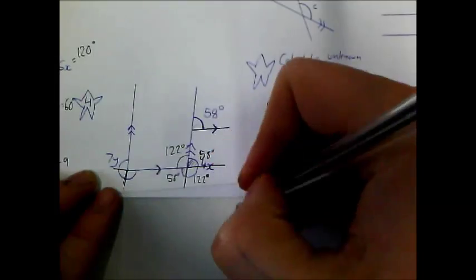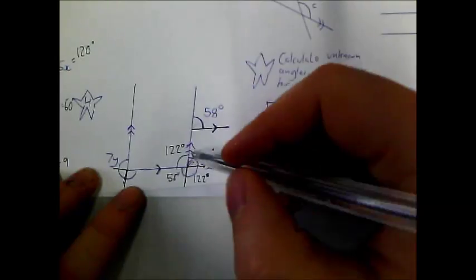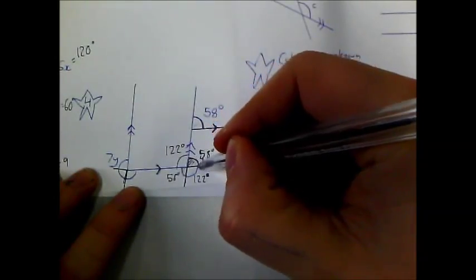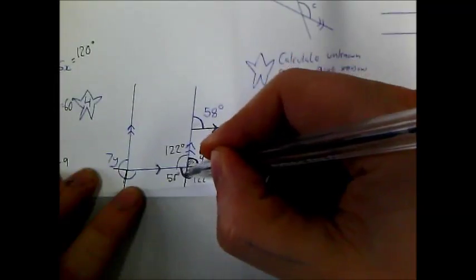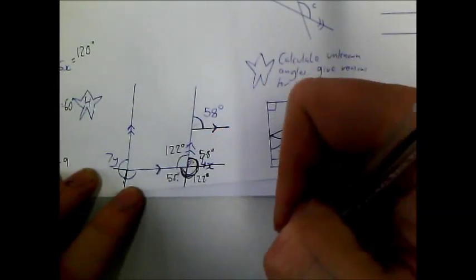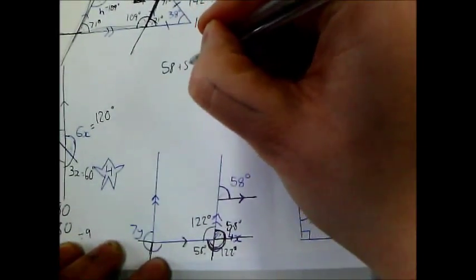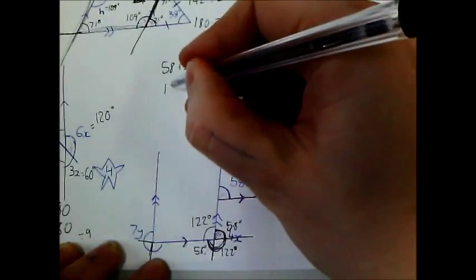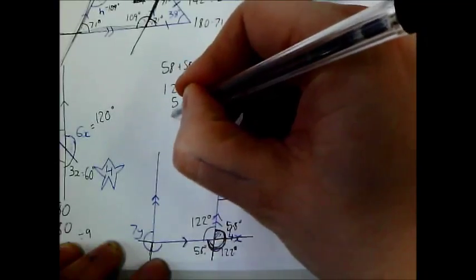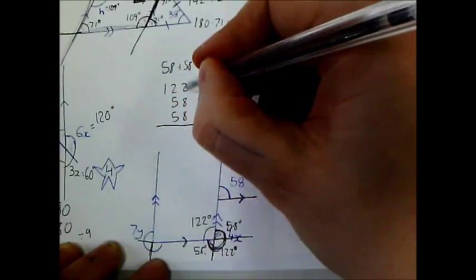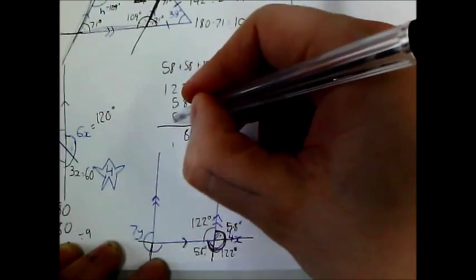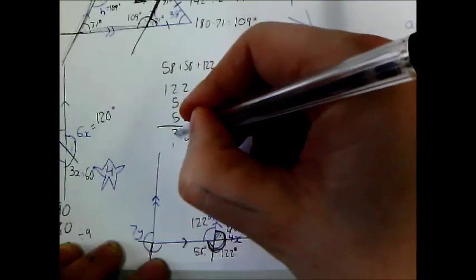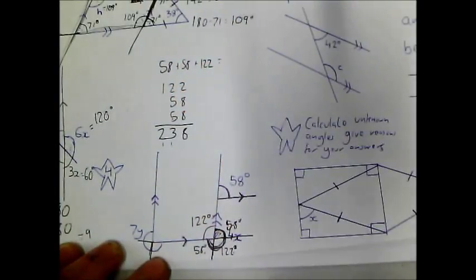So this is also 122 degrees. Now let's work out what x is worth. 4x is worth all of this amount, which is 58 degrees, 58 degrees, and 122 degrees. So adding those up: 58 plus 58 plus 122. 8 and 2 is 10 plus 8 is 18; 5 and 5 is 10, plus 2 is 12, plus 1 is 13; that gives 238.